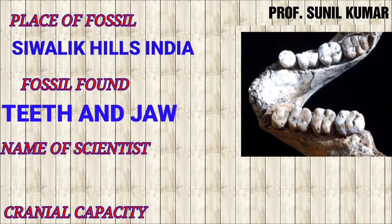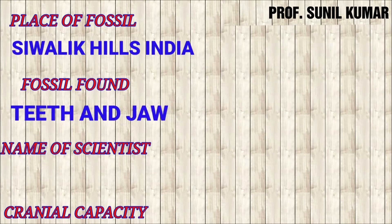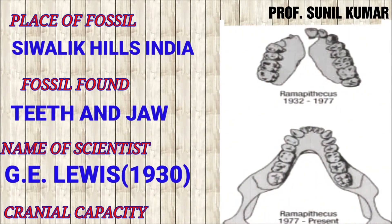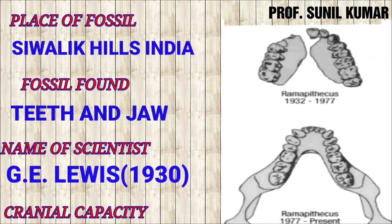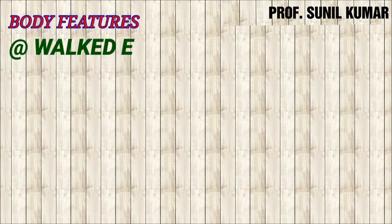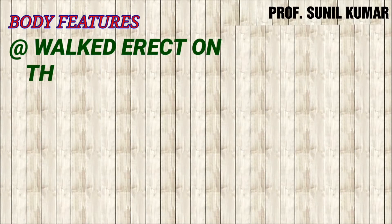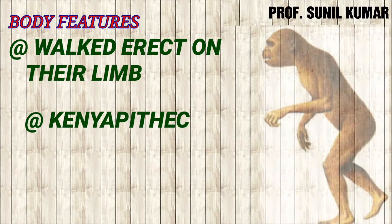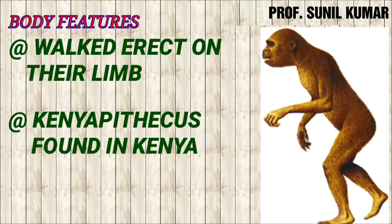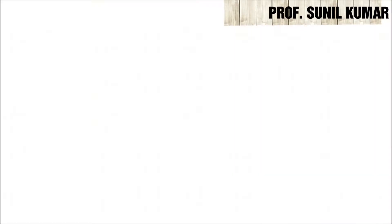The scientist G.E. Lewis in 1930 discovered the fossils of Ramapithecus. The cranial capacity was not known. They walked upright on their limbs, meaning they were bipedal. A similar fossil was found in Kenya as well, and hence they were also called Kenyapithecus.